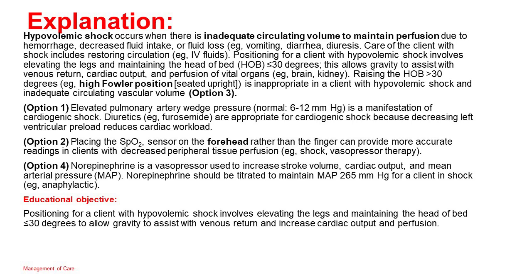Option 1: Elevated pulmonary artery wedge pressure (normal: 6–12 mmHg) is a manifestation of cardiogenic shock. Diuretics, e.g., furosemide, are appropriate for cardiogenic shock because decreasing left ventricular preload reduces cardiac workload. Option 2: Placing the SpO2 sensor on the forehead rather than the finger can provide more accurate readings in clients with decreased peripheral tissue perfusion, e.g., shock or vasopressor therapy. Option 4: Norepinephrine is a vasopressor used to increase stroke volume, cardiac output, and mean arterial pressure (MAP). Norepinephrine should be titrated to maintain MAP ≥65 mmHg for a client in shock, e.g., anaphylactic.